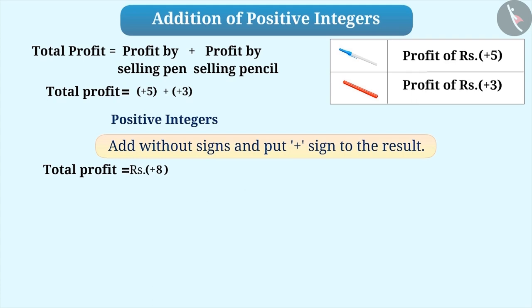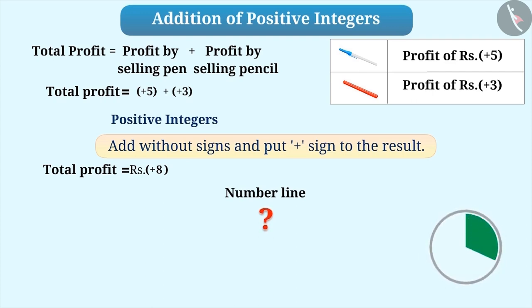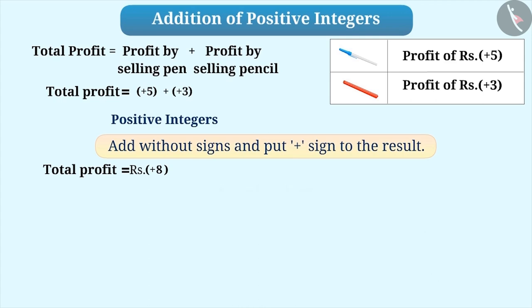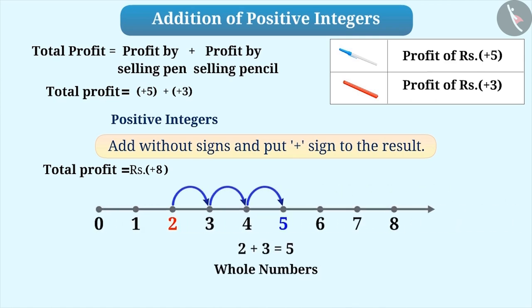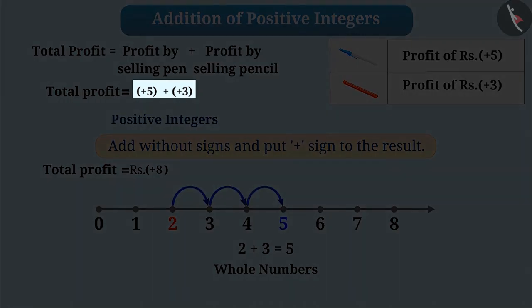Can we use the number line for addition of integers? The addition of whole numbers can be represented on the number line. Similarly, the addition of integers can also be represented on the number line. We will understand it with the example of +5 + +3.